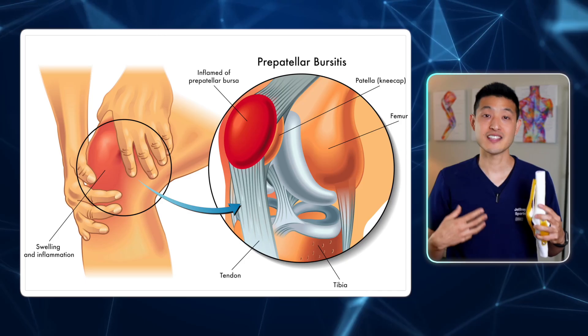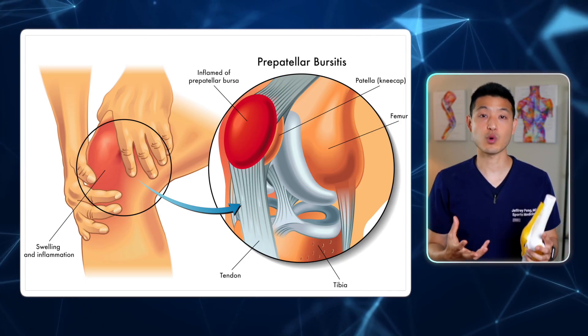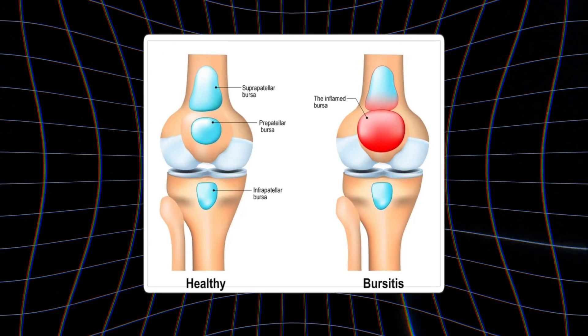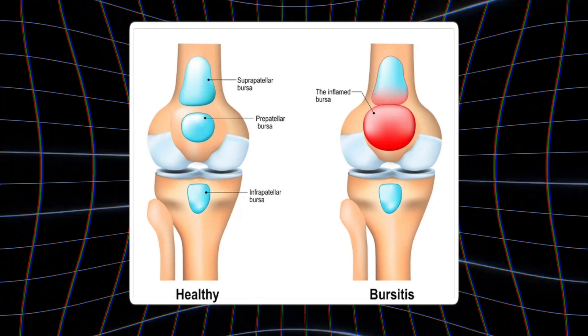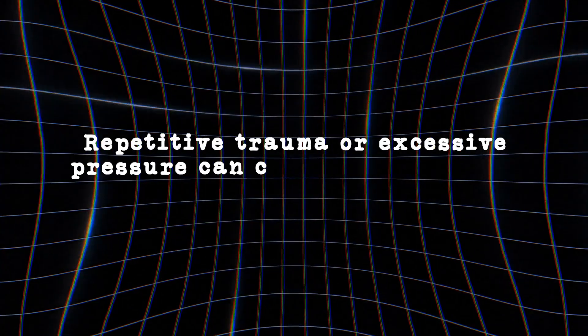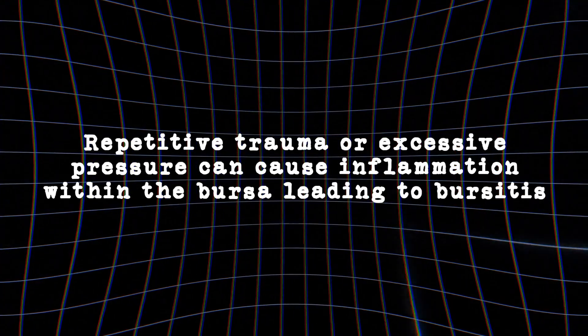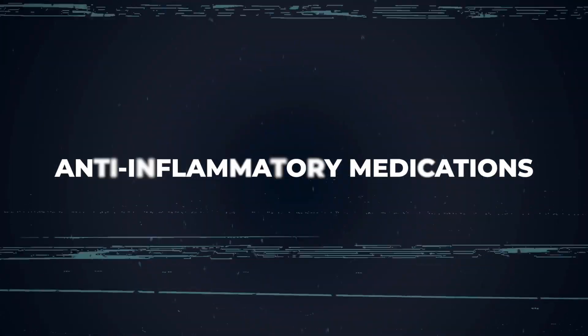Pain in front of the kneecap — beneath the skin but above the bone — is often due to pre-patellar bursitis. This is usually characterized by a swollen and inflamed bursa. A bursa is a small fluid-filled sac designed to reduce friction and act as a cushion. Repetitive trauma or excessive pressure can cause inflammation within the bursa leading to bursitis. Ice, compression, and anti-inflammatory medications usually lead to resolution, but sometimes the fluid does need to be aspirated by a healthcare provider.